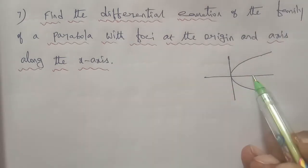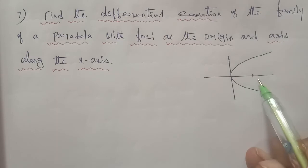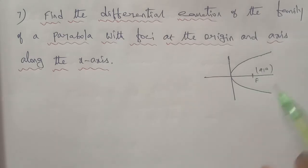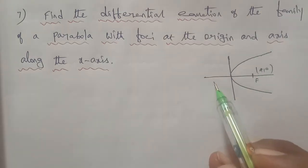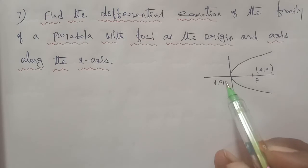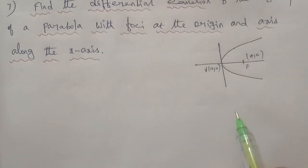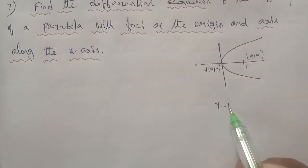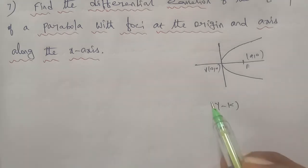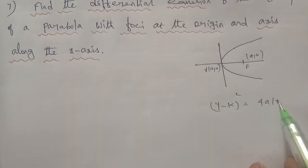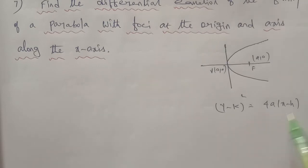For an open-right parabola, the focus is at point (a, 0) and the vertex is at (h, k). The general equation of the parabola is: (y minus k) squared equals 4a into (x minus h).